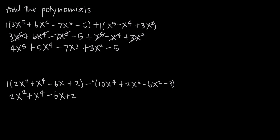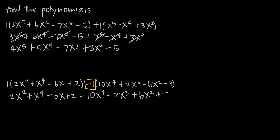Here's where we have to be careful. Not only do we have the implied 1 out in front of our parentheses, but we have this negative sign. So essentially we have a negative 1 that needs to be distributed across each of the terms inside our parentheses. We multiply 10x to the fourth by negative 1 and get negative 10x to the fourth. Negative 1 times positive 2x cubed gives negative 2x cubed. Negative 1 times negative 6x squared — the two negatives cancel — giving us positive 6x squared. And negative 1 times negative 3, the negatives cancel, giving us positive 3.